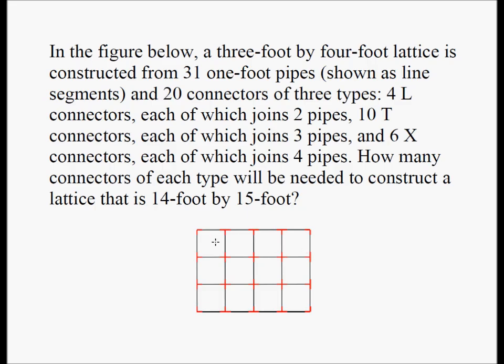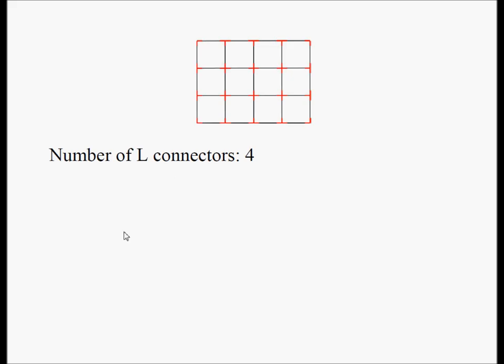By lattice, we mean basically rectangular grids. So this is a 4 by 3 lattice. The red marks that you see are called the connectors. These black lines are your one-foot pipes. We have to visualize a 14 foot by 15 foot lattice and find out how many T connectors. This is an L connector. This is a T connector. This is an X connector. How many of each would we need?